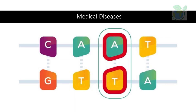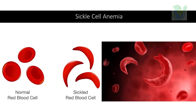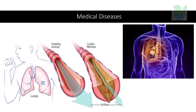Base editors have been developed for a wide range of organisms and cell types and have been used to correct genetic mutations that cause diseases, such as sickle cell anemia, cystic fibrosis, and many others. Currently, base editing is a CRISPR-Cas9-based genome editing technology that allows the introduction of point mutations in the DNA without generating DSBs.